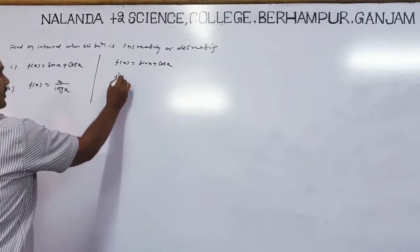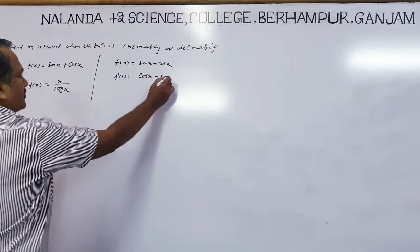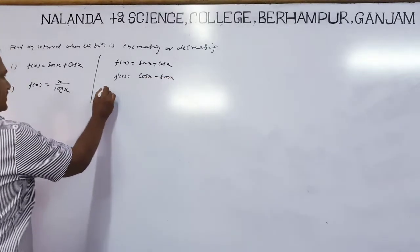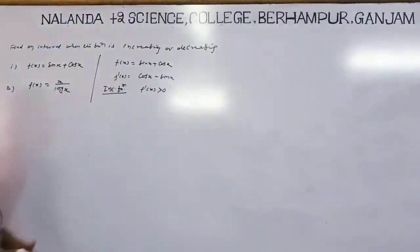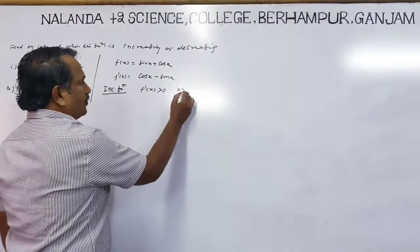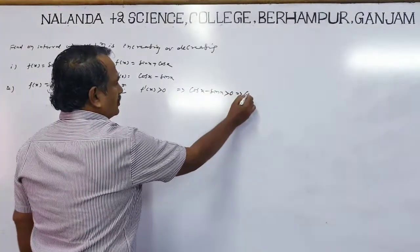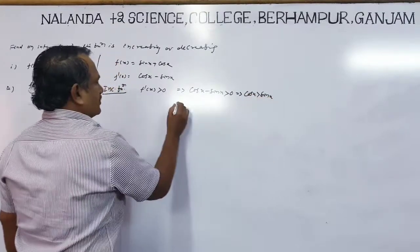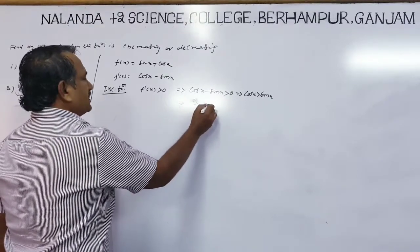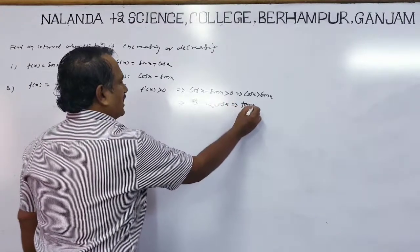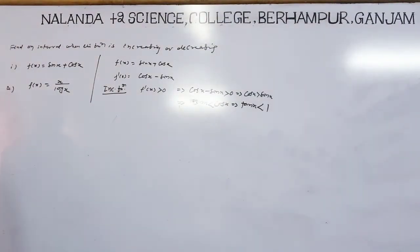So f'(x) = cos x - sin x. For increasing function, f'(x) greater than 0 means cos x - sin x greater than 0, or cos x greater than sin x, which implies sin x less than cos x, so tan x less than 1.